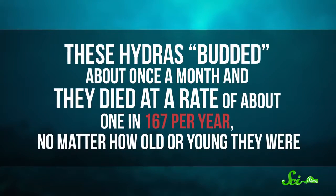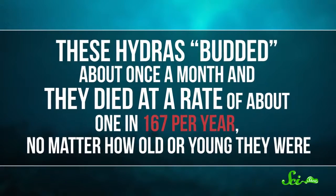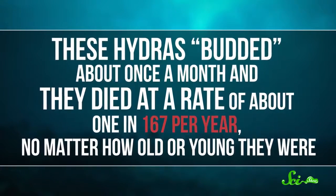These hydras reproduced, or budded, about once a month. And they died at a rate of about 1 in 167 per year, no matter how old or young they were. If the mortality rates observed in this study continued, that means that in 3,000 years, 5% of those hydras would still be alive if they were kept safe in the lab. That would be a really long experiment.